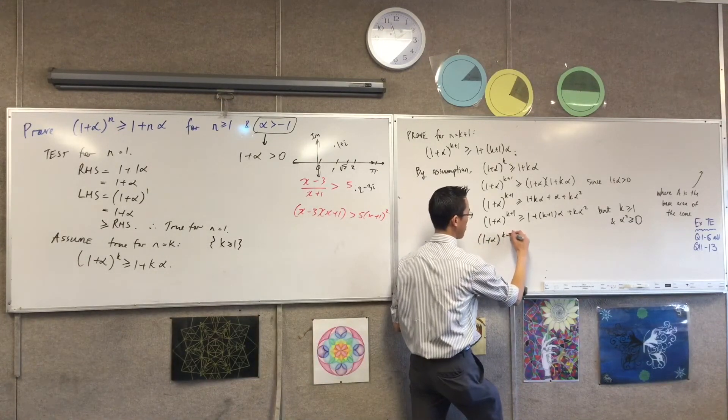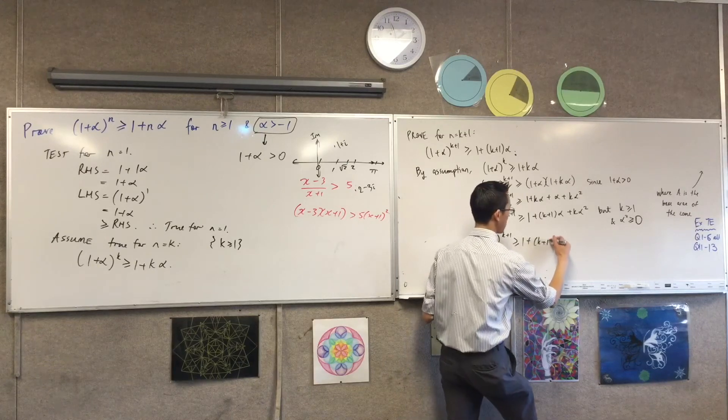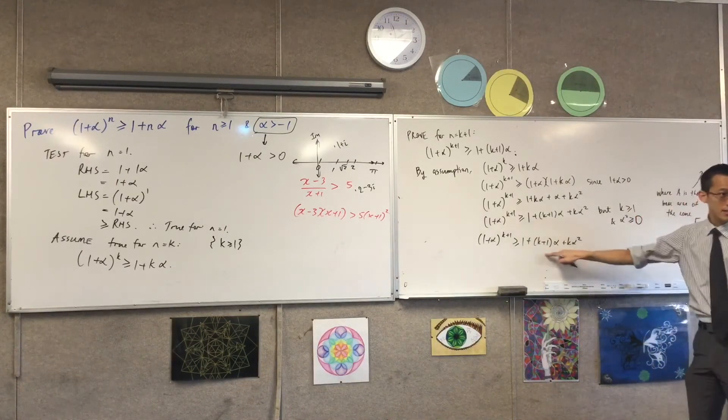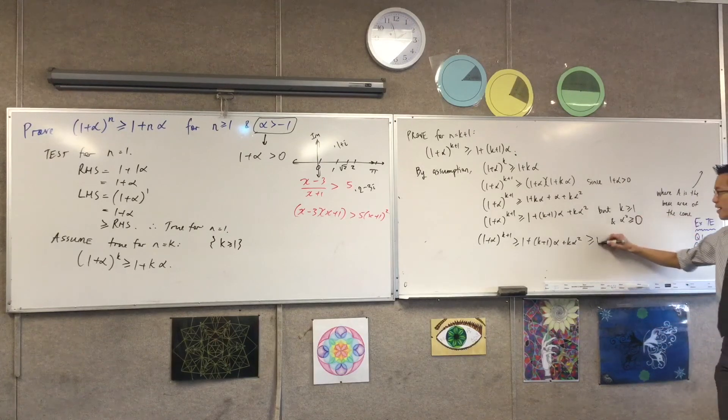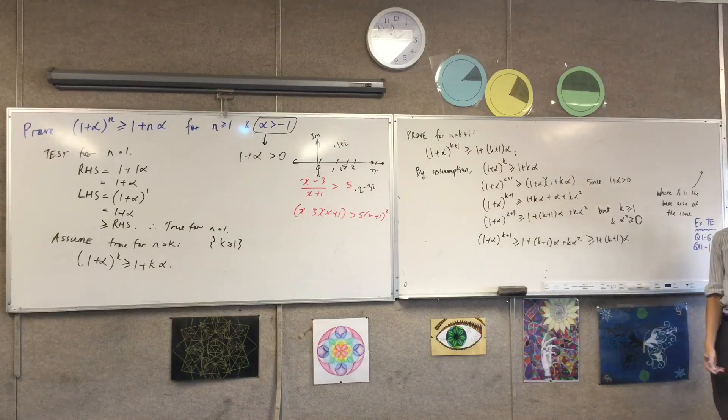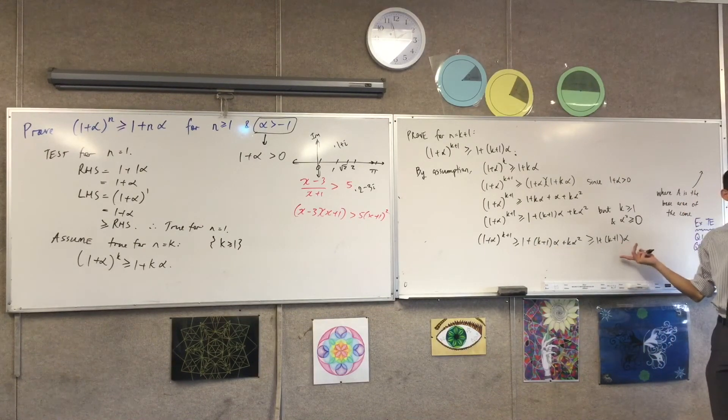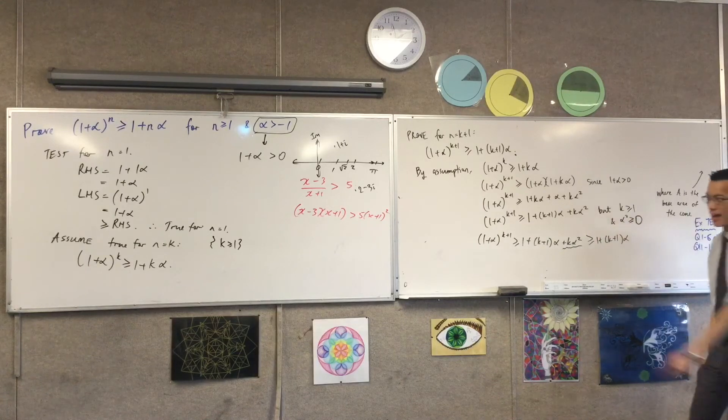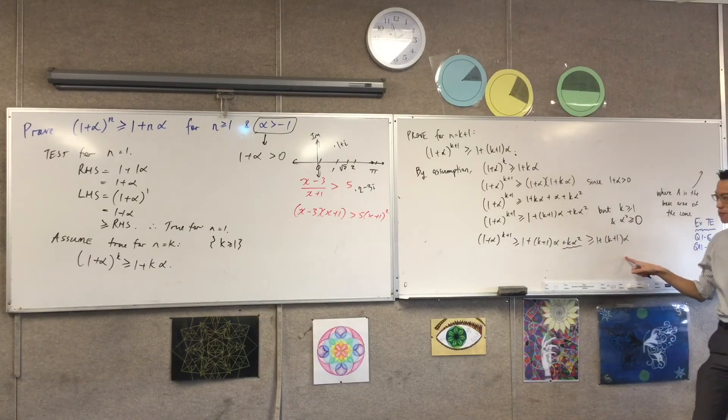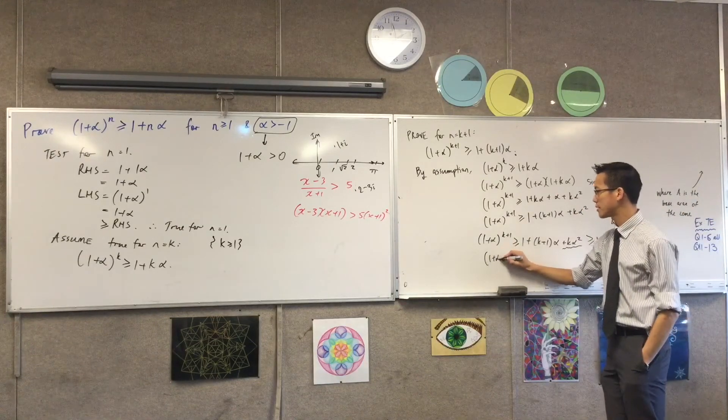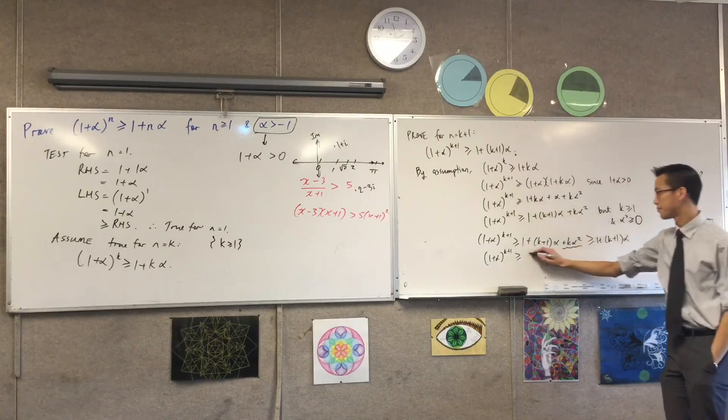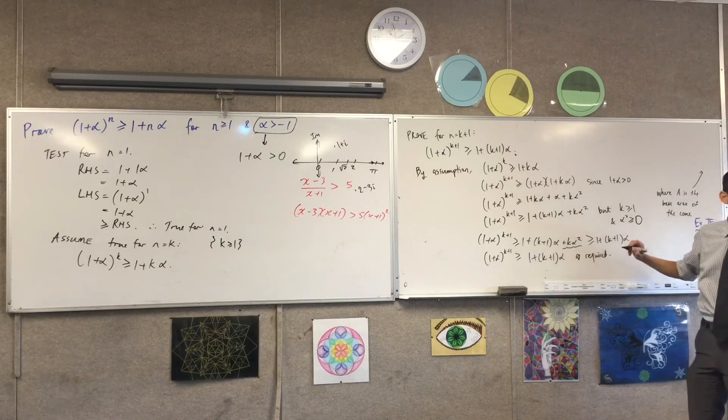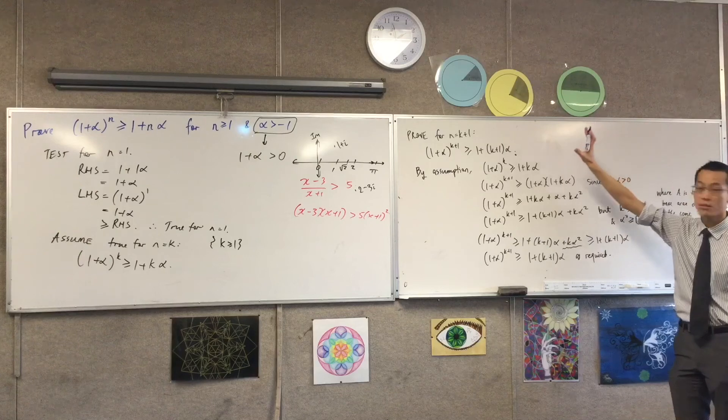So therefore, here's the way I'm going to write this next line. 1 plus alpha to the k plus 1 equals 1 plus k plus 1 alpha plus k alpha squared. Now, the lovely thing about this, as I've just established, is that this is greater than or equal to, like it's bigger again, than what I actually want. This is like saying 10 plus 5 is bigger than 10. It's the same thing here, plus an extra bit. So if a is bigger than b is bigger than c, then a would be bigger than c. There's this intermediate guy who I can just take out of there. So therefore, 1 plus alpha to the k plus 1 is bigger than the actual thing I'm after.